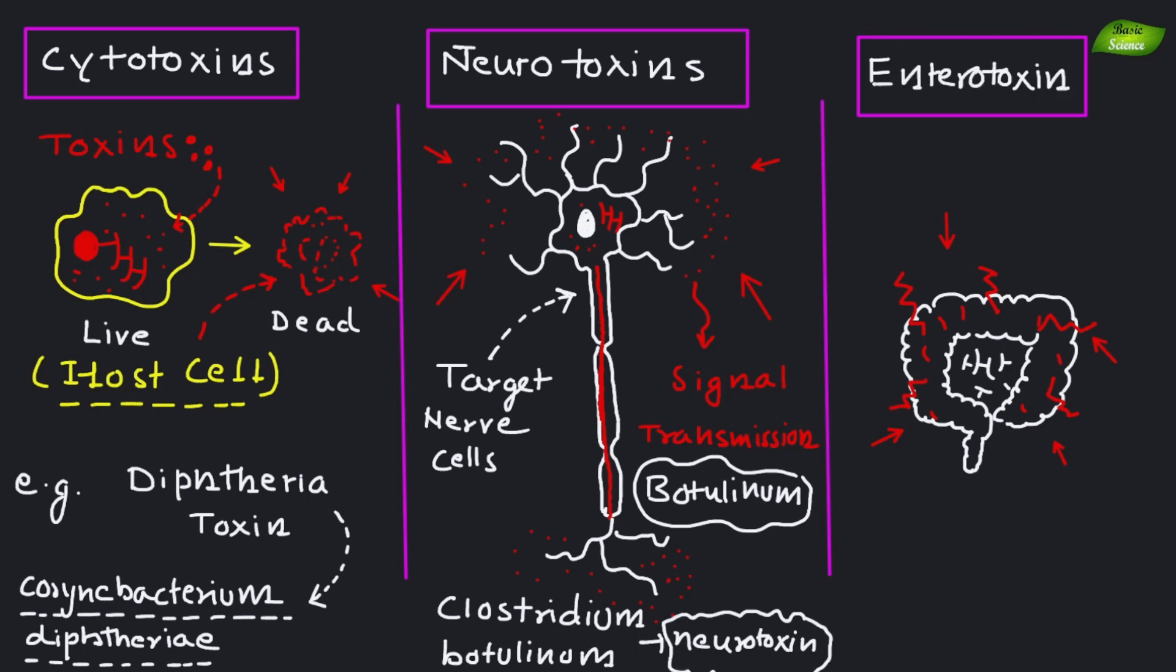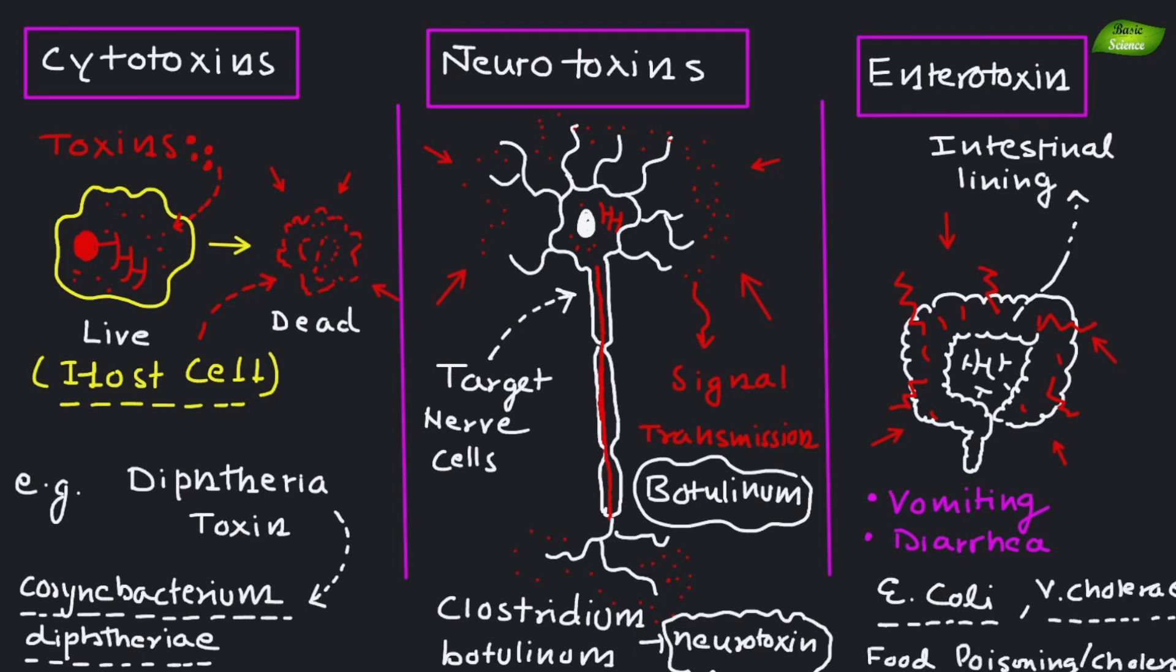The third category is enterotoxins. These affect the intestinal lining, causing symptoms such as vomiting and diarrhea. Pathogenic E. coli strains and Vibrio cholerae produce enterotoxins that lead to food poisoning and cholera.